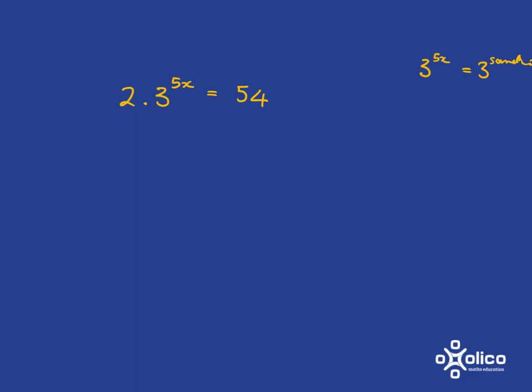So to get rid of the 2, we divide left-hand side by 2. So we've got to divide the right-hand side by 2. And 54 divided by 2 gives me 27.